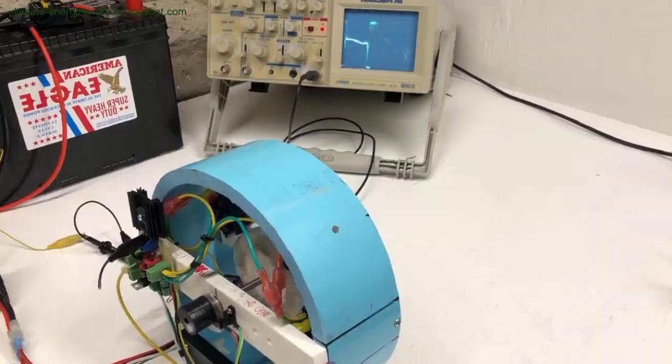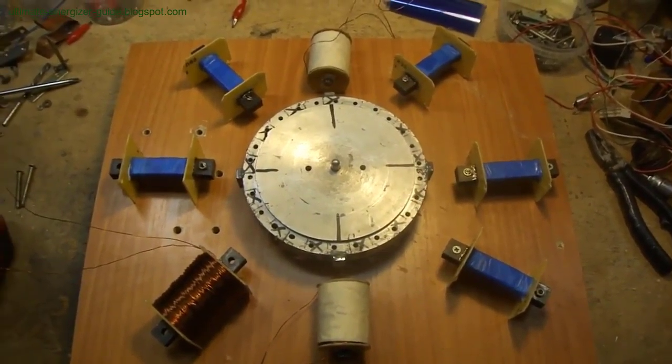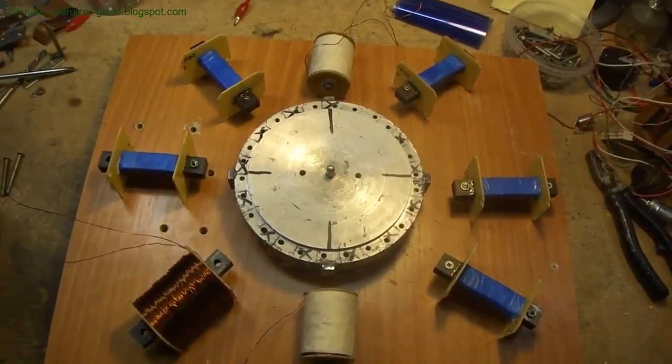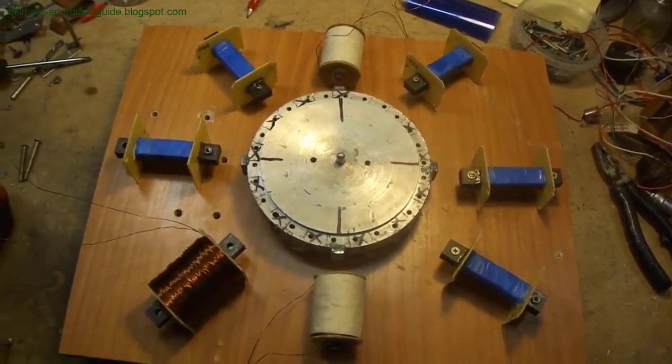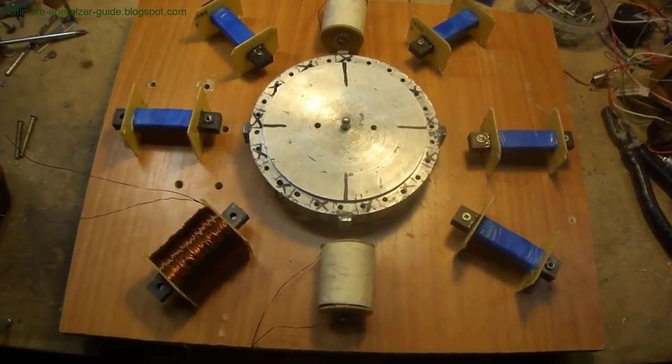Magnet shape significantly influences its magnetic field pattern. Contrary to common depictions, the magnets should be much longer than their width or diameter in the case of cylindrical magnets. This elongated shape ensures a more effective magnetic interaction within the generator.